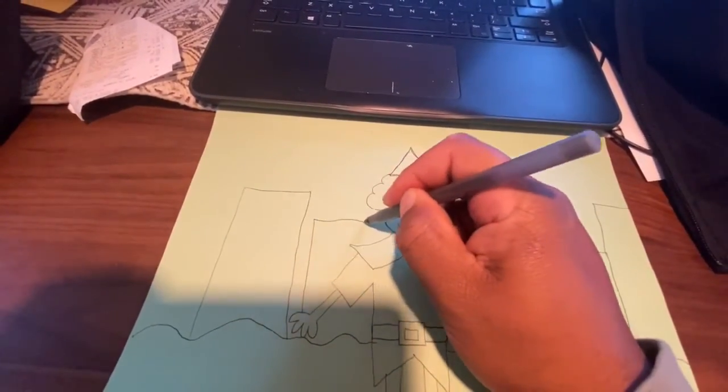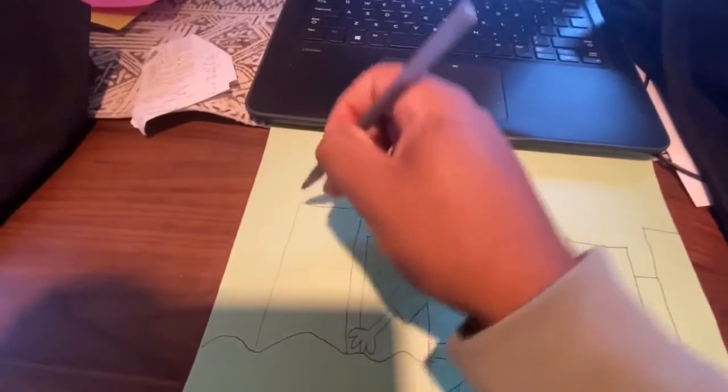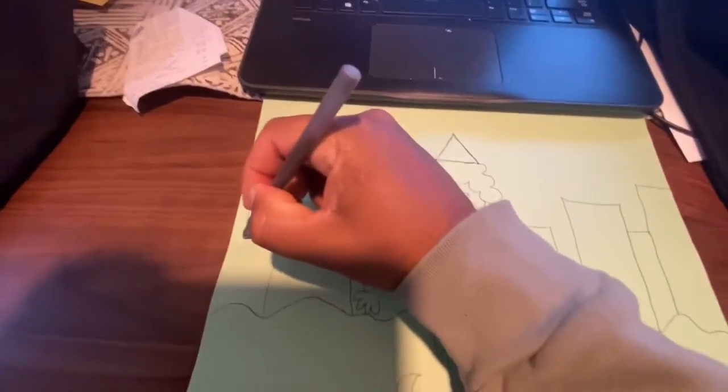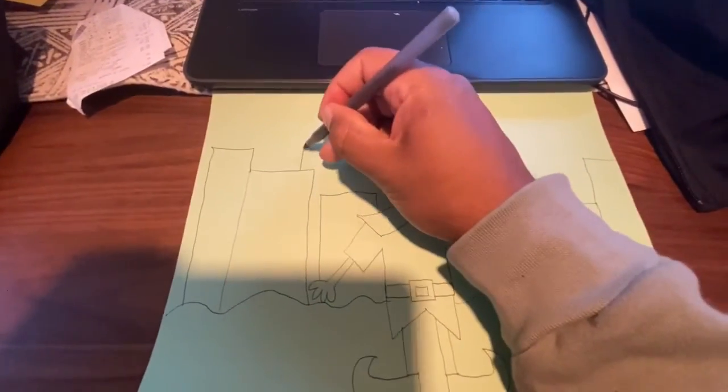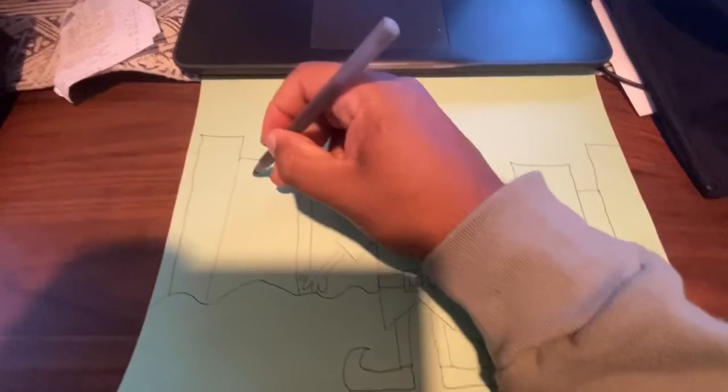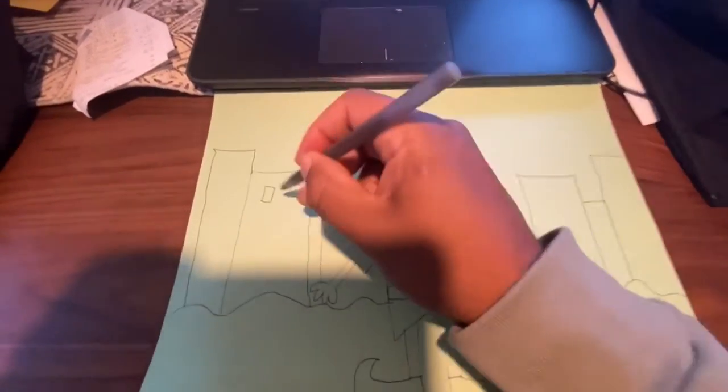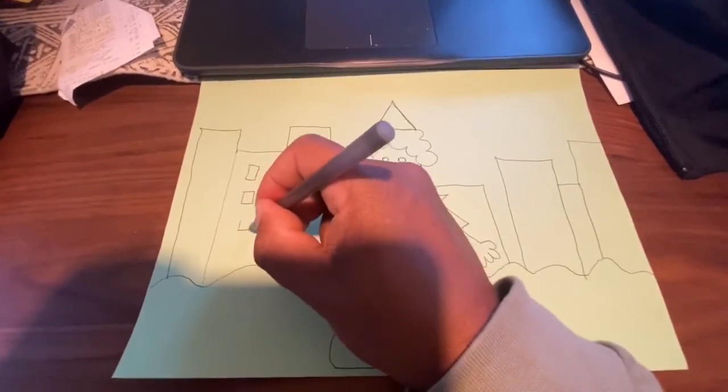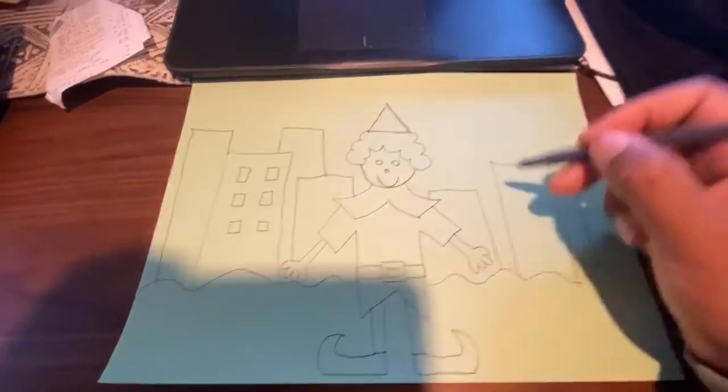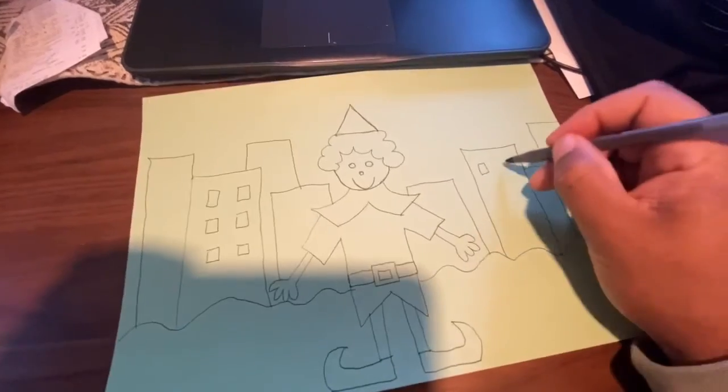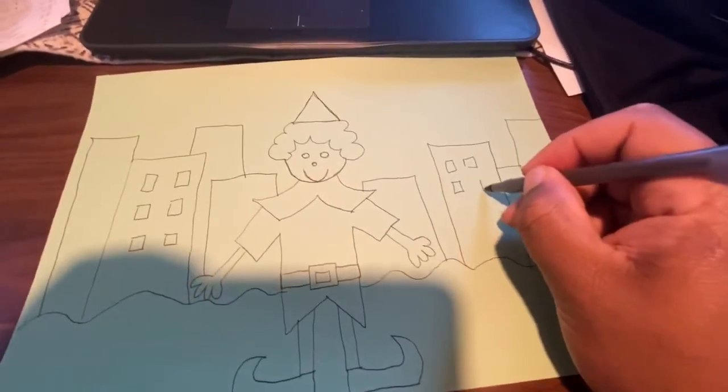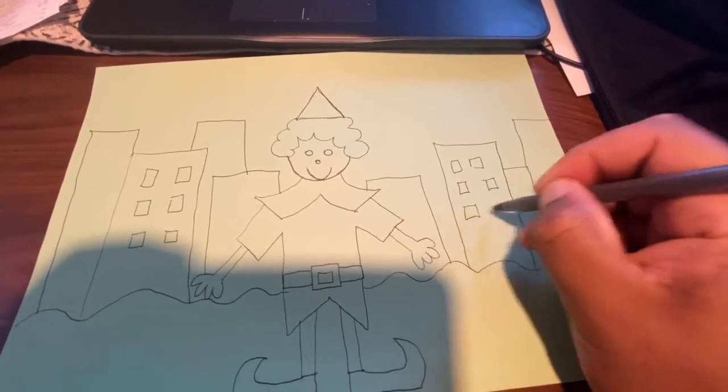There's a famous movie called Elf that has Will Ferrell in it. There's some more there. Then we can do smaller shapes like squares inside. These will represent the windows, windows, windows, windows, windows. And then we can color this in.